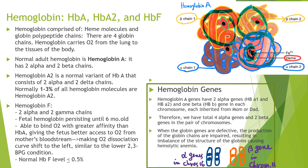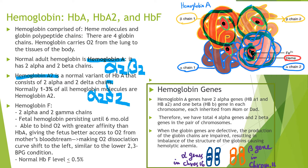The main hemoglobin of the normal adult is hemoglobin A, having two alpha chains and two beta chains. There are other types of hemoglobin. Hemoglobin A2 is a normal variant of hemoglobin A, consisting of two alpha chains and two delta chains. Normally, 1 to 3% of all hemoglobin molecules are hemoglobin A2.